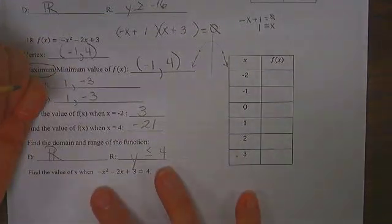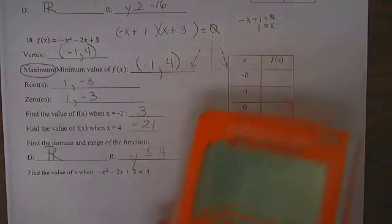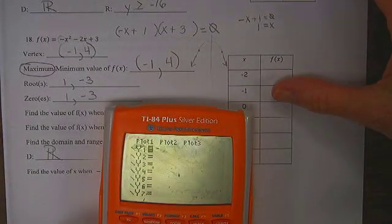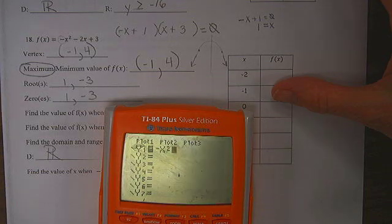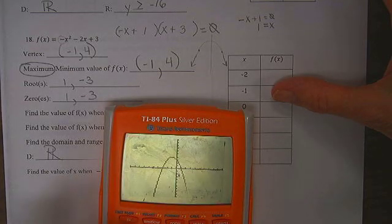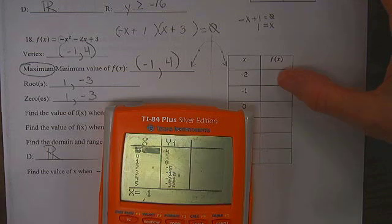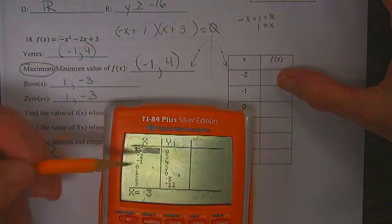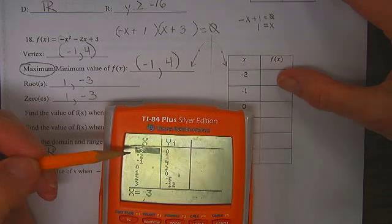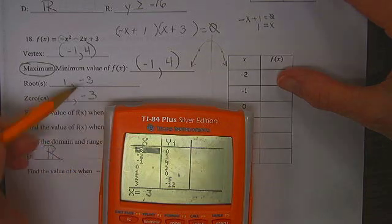So let's see whether I was right. Turn it on. Y equals negative x squared minus 2x plus 3. There's my graph. Second table. If x is negative 1, y is 4. When x is 0, y is negative 3. Good, we got that right.